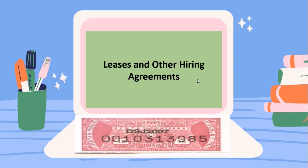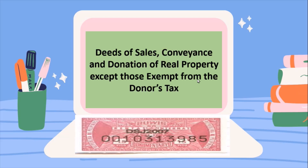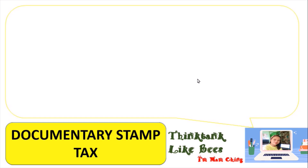We also have leases and other hiring agreements, mortgages, pledges, and deeds of trust, deeds of donation, conveyance and donation of real property — except those exempt from the donor's tax — and chartered parties and similar instruments. Those are the documents that are authenticated through the use of documentary stamp tax.